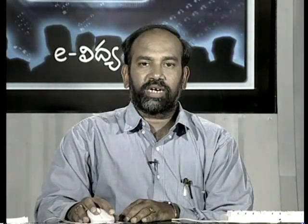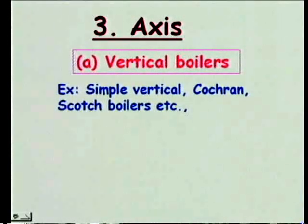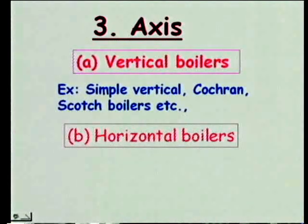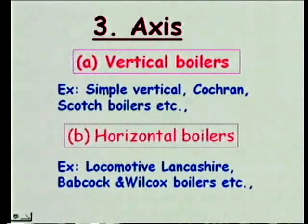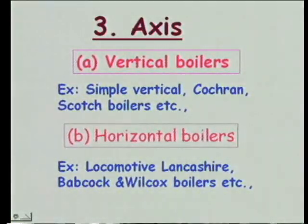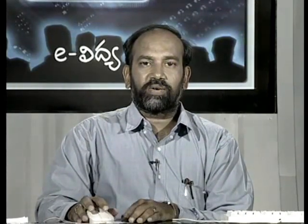Based on the axis, boilers may be vertical, horizontal, or inclined. Vertical boilers include the simple vertical, Cochrane, and Scotch boilers. Horizontal boilers include the locomotive boiler, Lancashire boiler, and Babcock and Wilcox boiler. There are also inclined axis boilers.